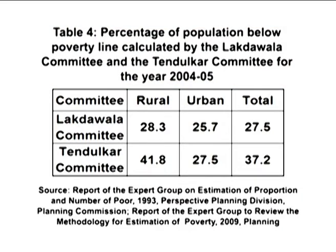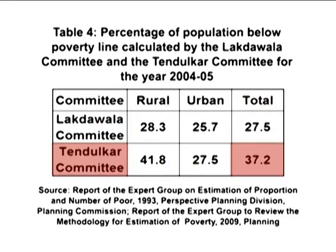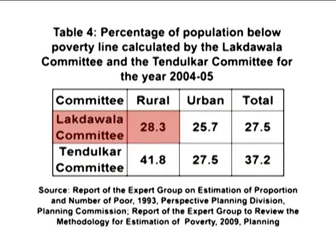From Table 4 shown on the screen, we can see a substantial difference in the percentage of people below the poverty line measured by the Lakdawala Committee and the Tendulkar Committee for the year 2004-05. Whereas the Lakdawala measure estimated only 27.5 percent people below the poverty line, estimates according to the Tendulkar criteria were 37.2 percent. For rural areas, the percentage given by Lakdawala Committee was only 28.3 percent, whereas it was 41.8 percent as calculated by Tendulkar Committee for 2004-05.